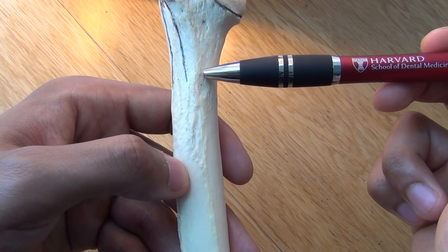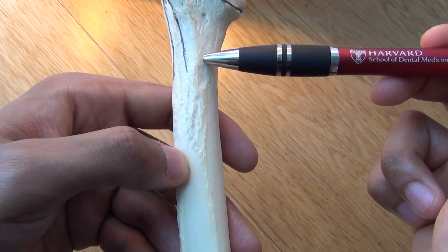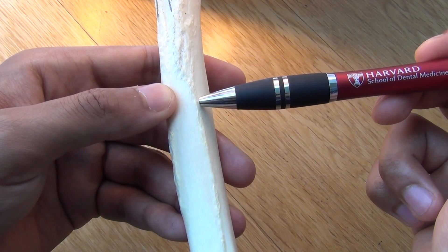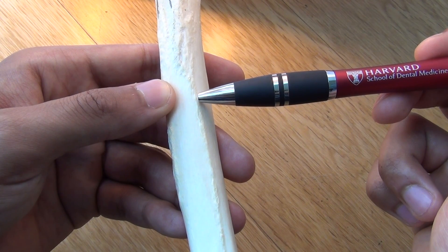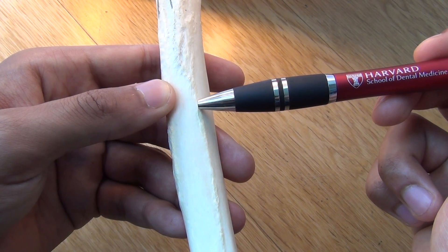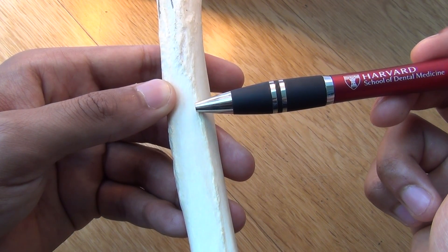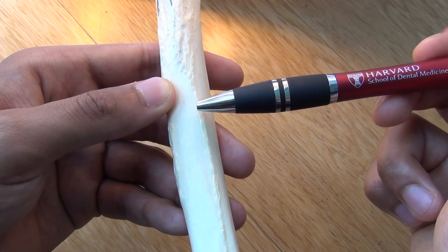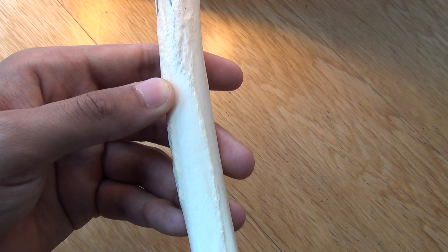The shaft, also known as the body, begins at the surgical neck and consists of three borders — anterior, medial, and lateral — three surfaces — anterolateral, anteromedial, and posterior — and two prominent features: the deltoid tuberosity and the radial groove.